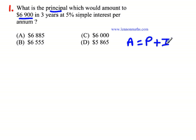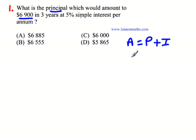The interest plus the principle will give us the amount. So if you put an amount in the bank, which is a principle, the bank will give you interest after that three-year period. And the amount at the end of the three-year period will be the principle — the amount you put in — plus the amount the bank is giving you. You'd have a total, in this case, of $6,900.